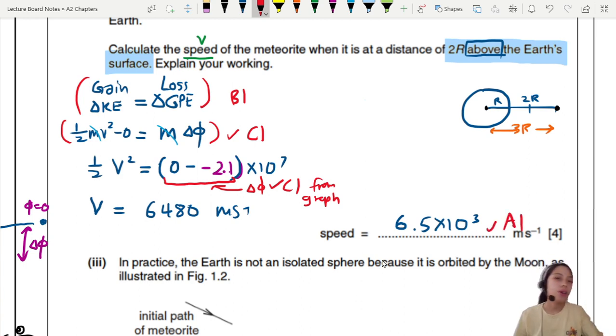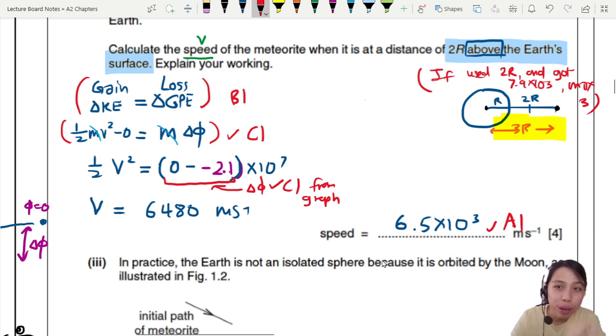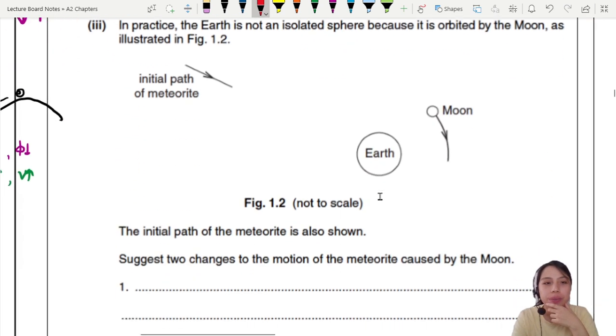So some of you may have forgotten that we actually want to use 3R on the right side and you use R or 2R. If you use 2R to find from the graph and you got, I think, 7.9 times 10 to the 3, then you maximum get 3 marks. So side note, they're a bit generous. They're like, okay, you read from graph correctly. But it's okay. So be careful, read the question above Earth's surface. Anyway, let's move to the part 3, the last part.